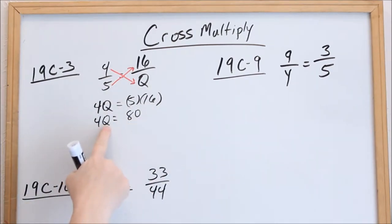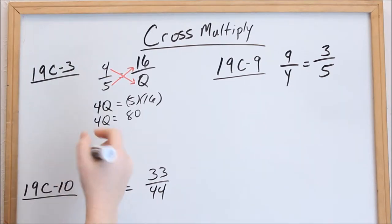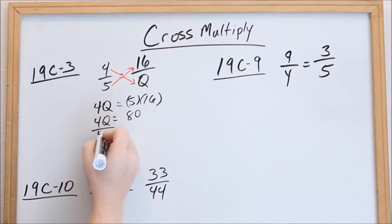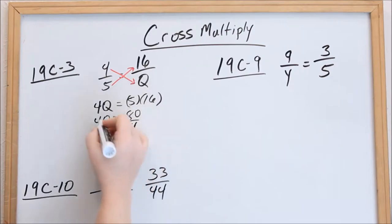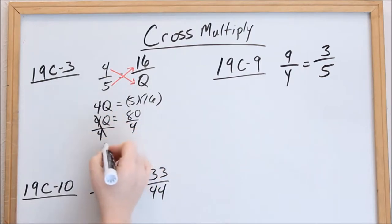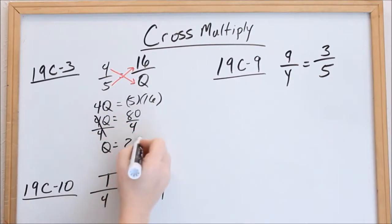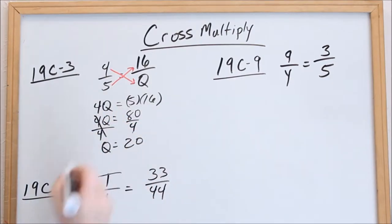We're solving for q. How do we get rid of 4? It's being multiplied, so we divide it over. Our 4s go away, and q equals 20.